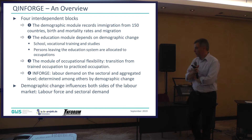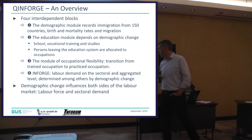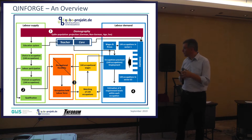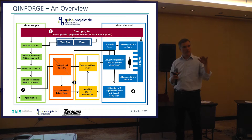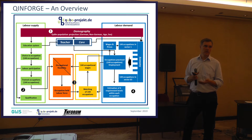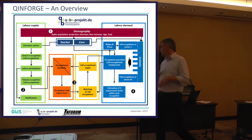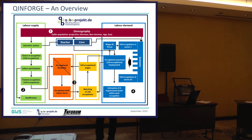Demographic change influences both sides of the model — the supply side and the demand side. In the diagram, demographic change sits at the top, feeding into the educational system on the left, which is labor supply, and into labor demand from the economic model INFORGE on the right. The flexibility model sits in the middle. We are able to compare the matching between 400 and 144 occupations.